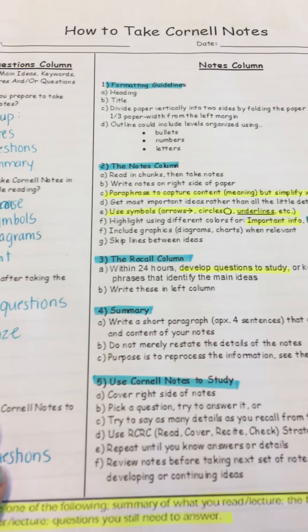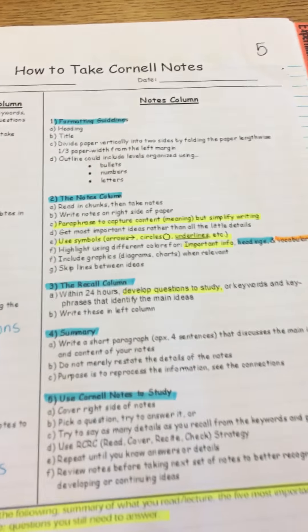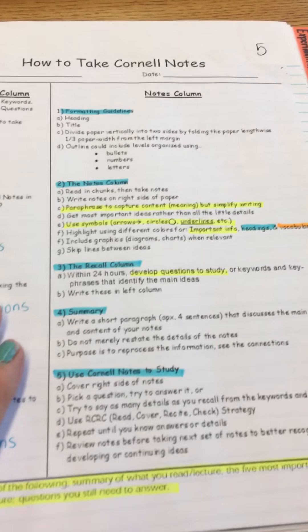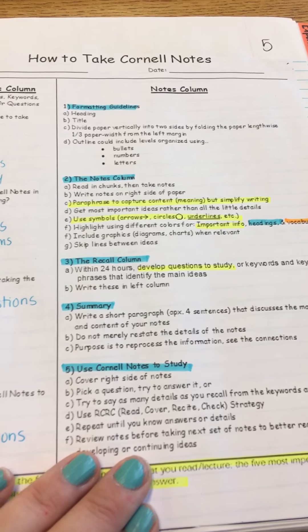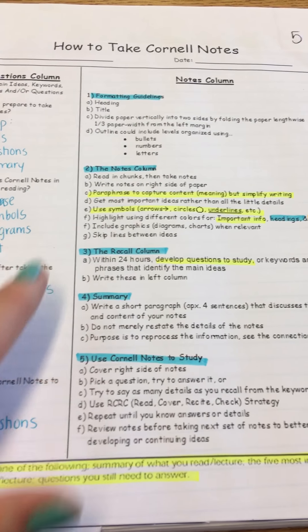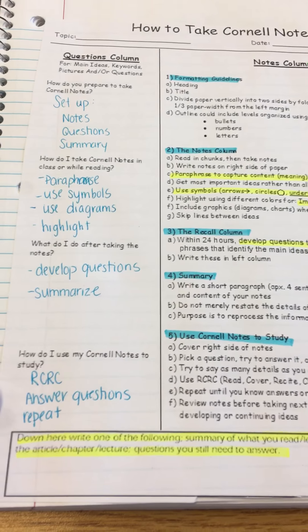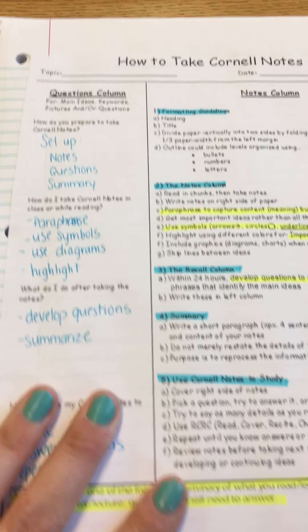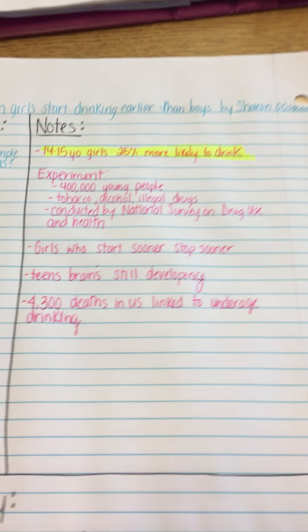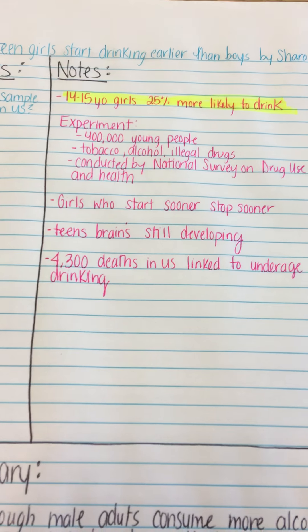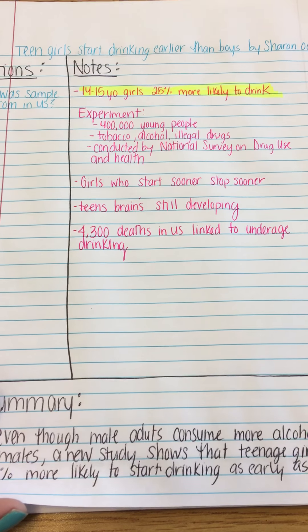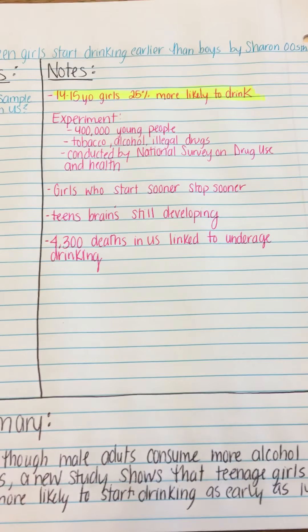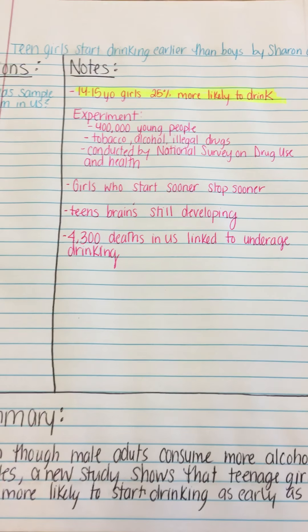Pages four and five are about how to take Cornell notes, which is how you guys will be taking your notes this year. We will be doing this page together in class, showing you how to set them up, how to highlight, how to ask questions, and how to write your summary. You will be given an article in class to read for homework and do an example practice Cornell note-taking that we will go over in class.